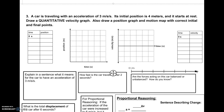This is how to solve problem number three on the fall final free response practice packet. A car is traveling with an acceleration of three meters per second squared. Its initial position is four meters and it starts at rest. Draw a quantitative velocity graph, also draw a position graph and motion map with correct initial and final points.